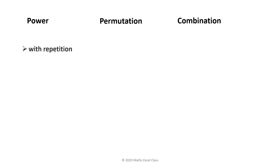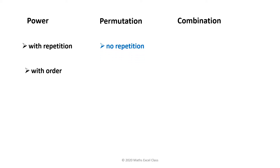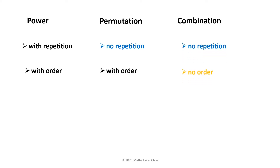In power: with repetition, with order. In permutation: no repetition, with order. In combination: no repetition, no order. We are going to look at an example of each.